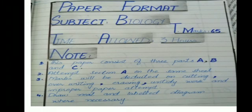On the next page, write the paper format of class 8 biology. First write the heading 'Paper Format,' then the heading 'Subject: Biology,' total marks is 65, and the time allowed is 3 hours. Write the next heading 'Note: This paper consists of three parts — Part A, Part B, and Part C. Attempt Section A on the same sheet. Marks will be deducted for cutting, overwriting, erasing, untidy work, and improper paper attempt. Draw neat and labeled diagrams where necessary.'